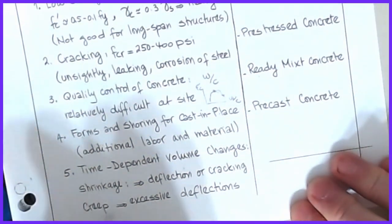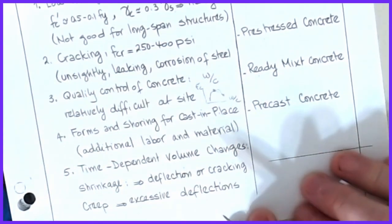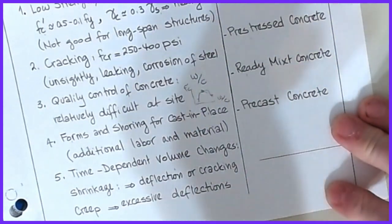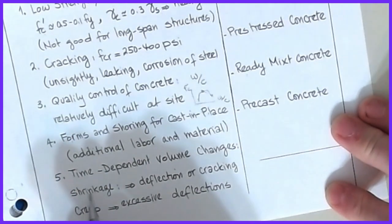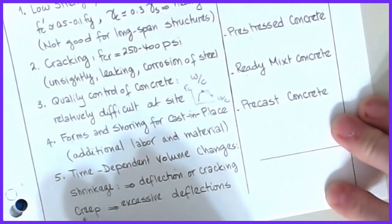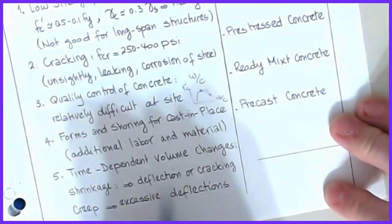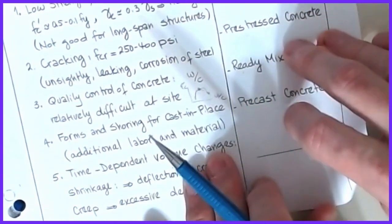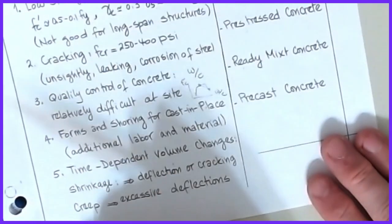Perhaps one of the biggest factors is the time-dependent volume change of concrete — it experiences something known as creep and shrinkage. Creep changes the strains of a member under a given sustained load such as the dead load. Deflection or cracking can be caused by shrinkage, which is a moisture-related evaporation process. Creep is an excessive deflection that increases over time up to a certain limit but doesn't occur immediately. So older concrete structures behave a little differently than newly placed ones.